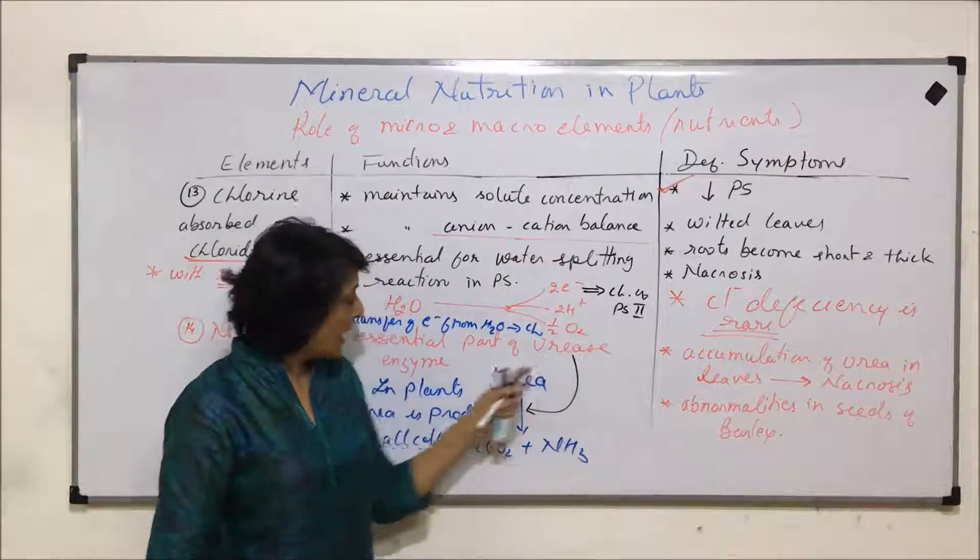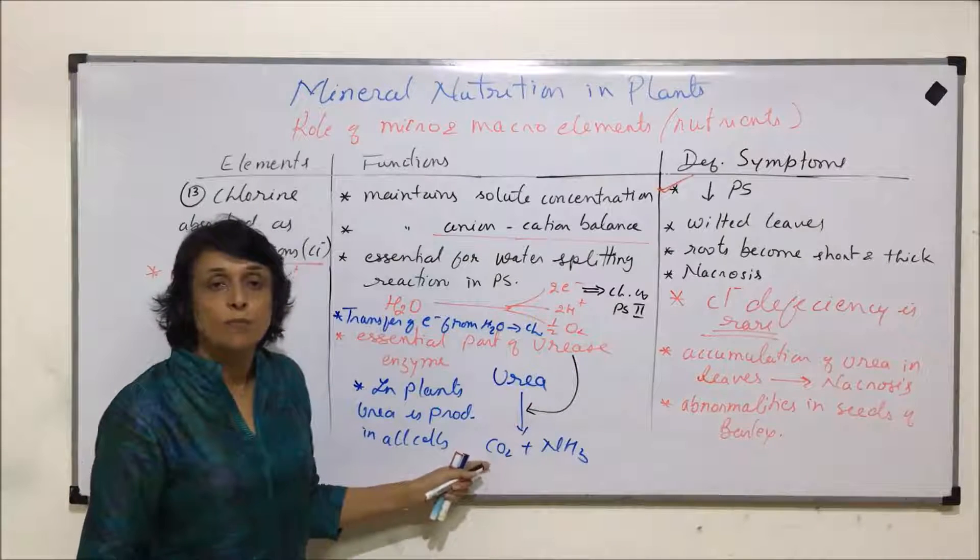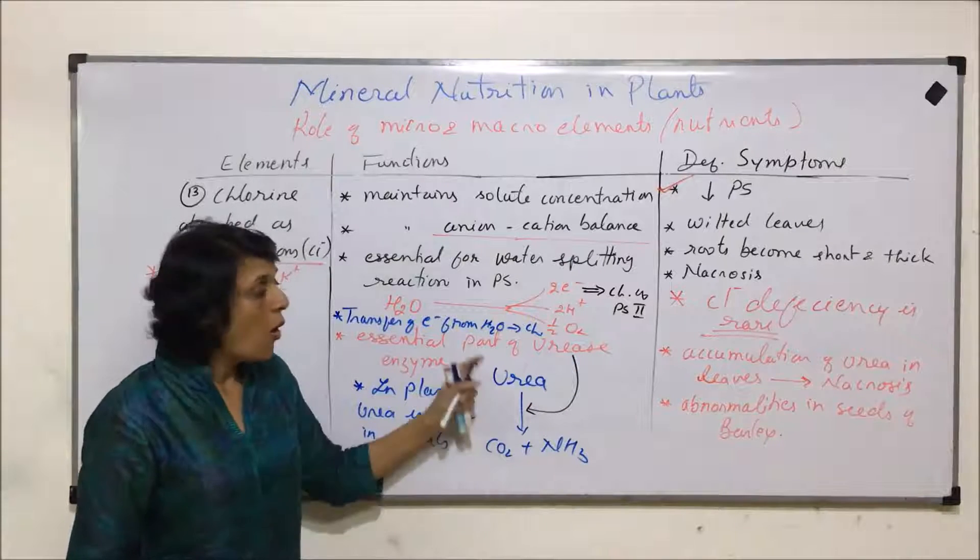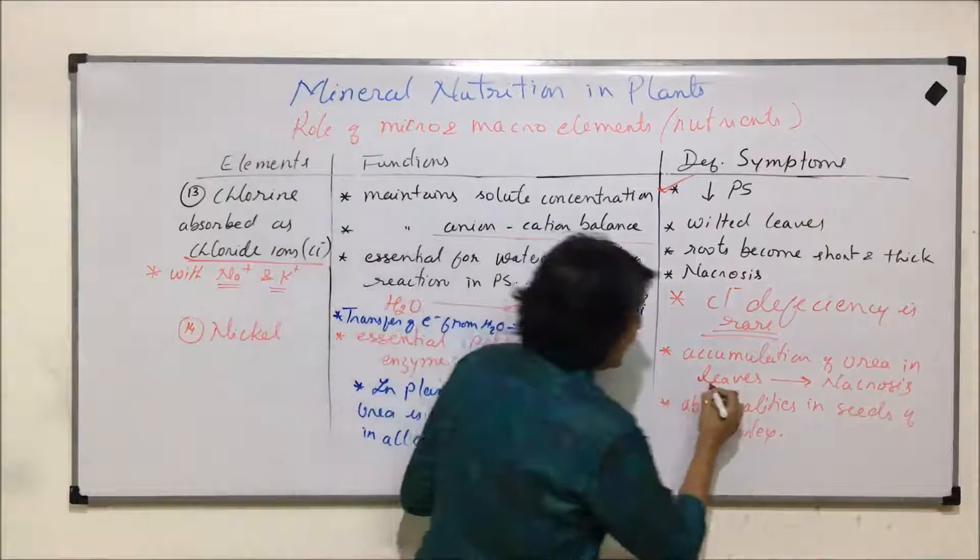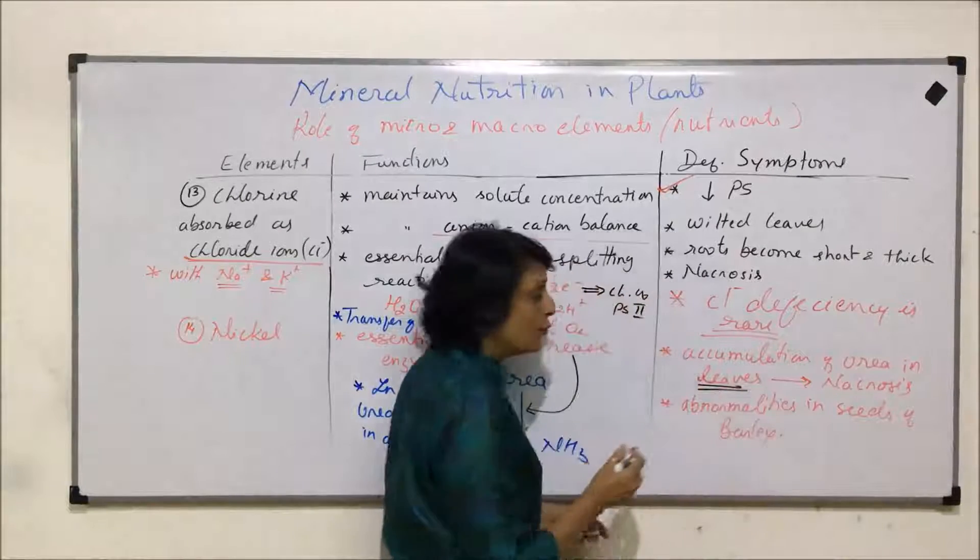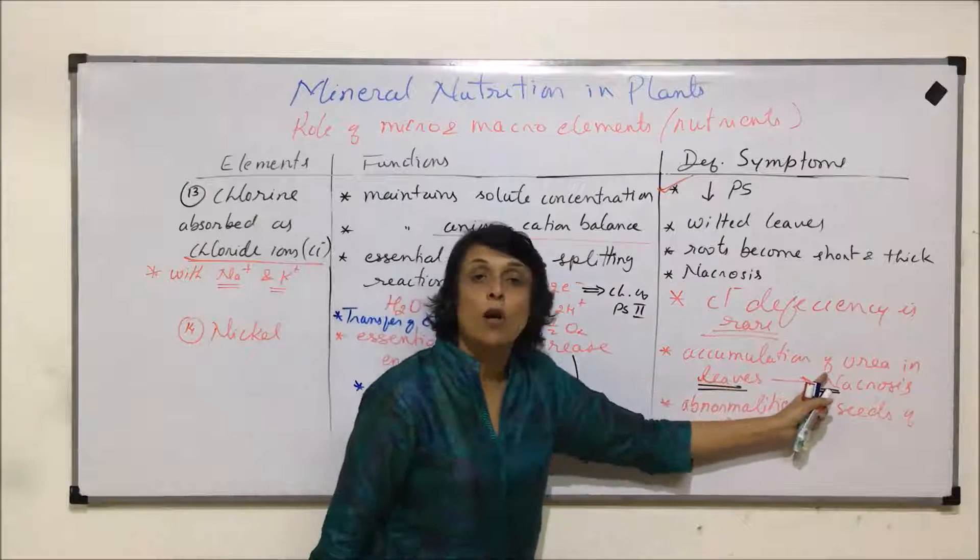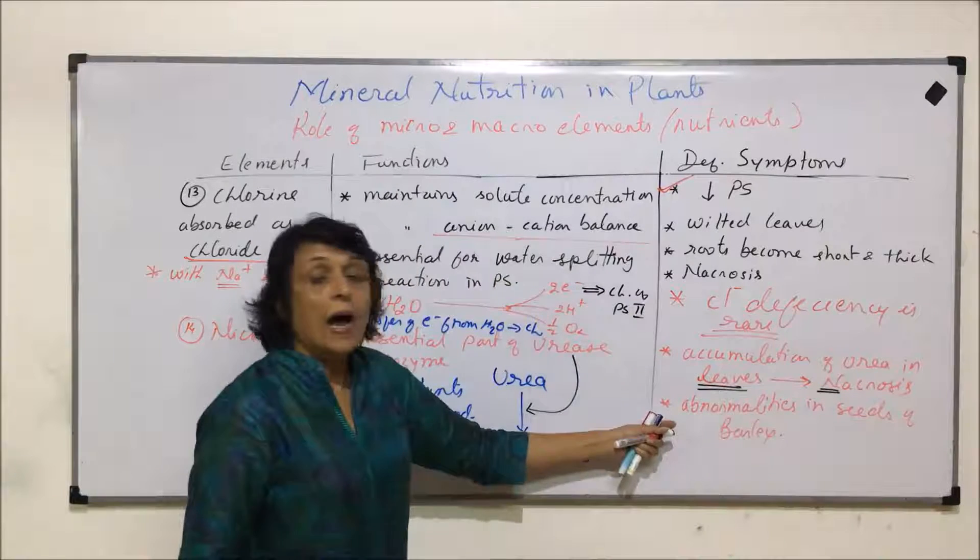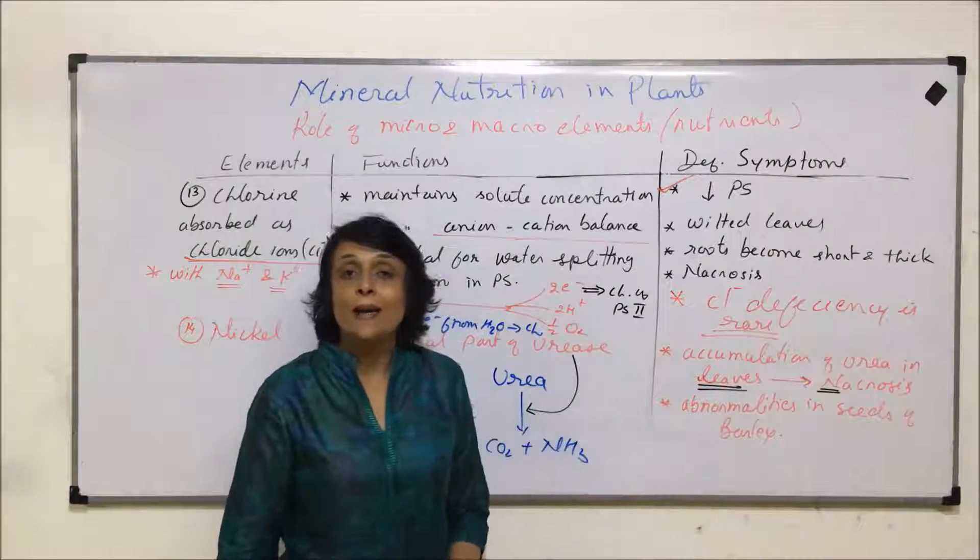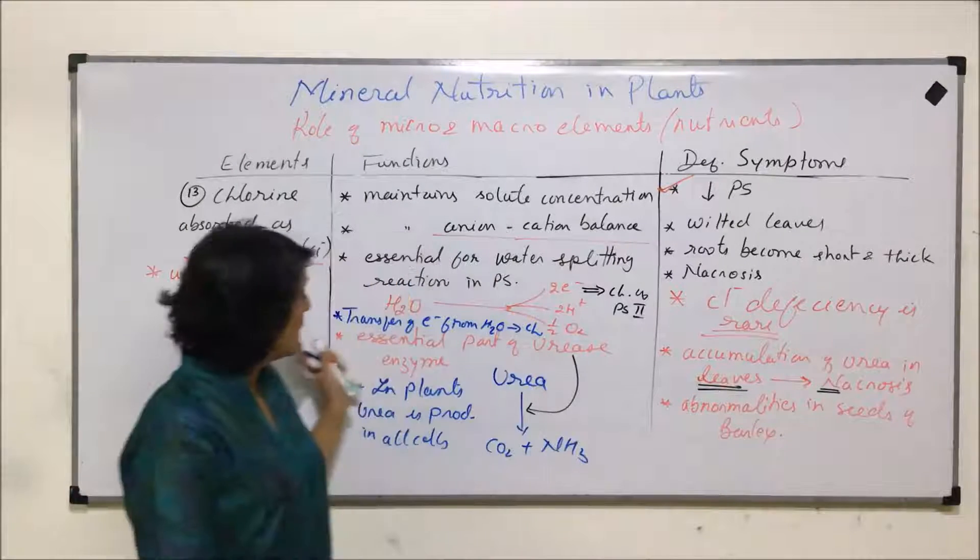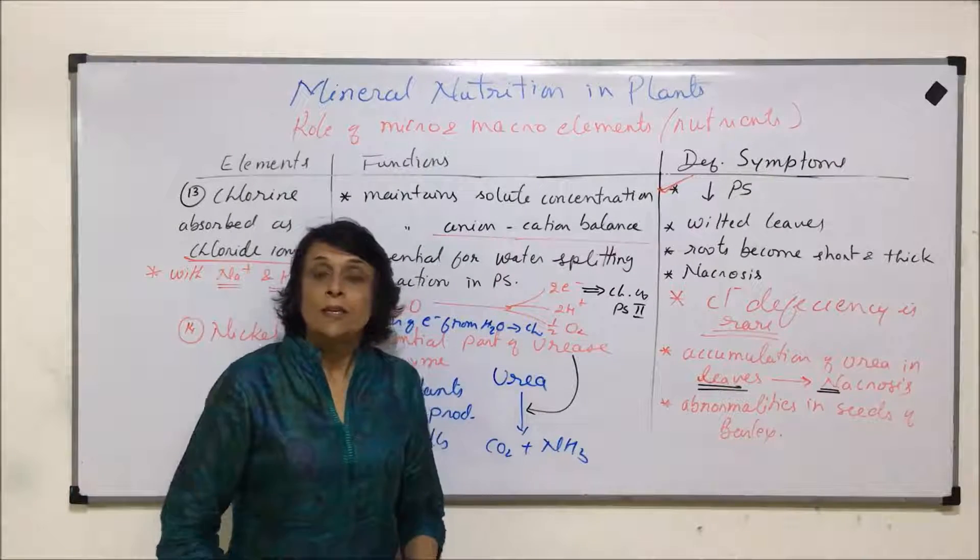Deficiency symptom based on this function: If enzyme is not there, then urea will not be broken down, or in other words, there would be accumulation of urea in the leaves, and that would result into death of the cells in the leaf, and that is what we call necrosis. Another abnormality which has been reported in barley seeds: due to nickel deficiency, seeds of barley were found to be abnormal.